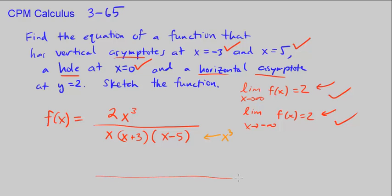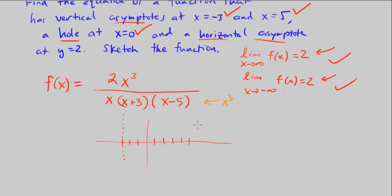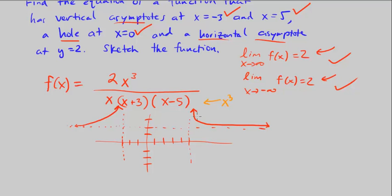Let's sketch this. At x equals negative 3, we have a vertical asymptote. At x equals 5, we also have a vertical asymptote. As x approaches positive and negative infinity, the function approaches 2, so there's a horizontal asymptote at y equals 2 on both sides. The curve approaches that asymptote going left and right. There's a hole at x equals 0, so whatever the function does in that region, it has an open point there.